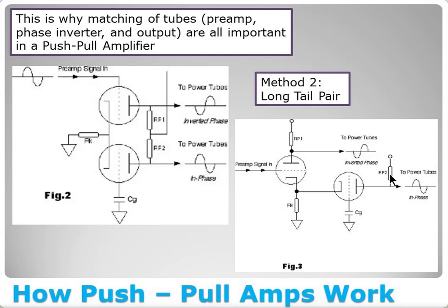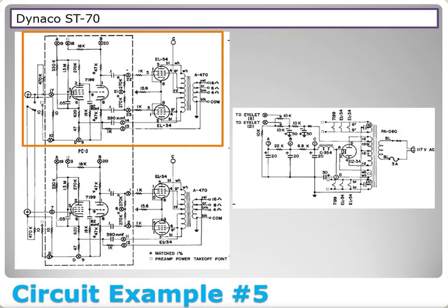Both method one and method two work well. The long-tail pair is used a lot in guitar amplifiers. To explain exactly why would require diving deep into biasing, which I'll save for another video. Let's now dive into circuit examples. Example number five in this series is the Dynaco ST70 — you cannot pick a more common push-pull amplifier. Hundreds of thousands were made.